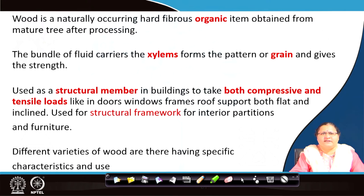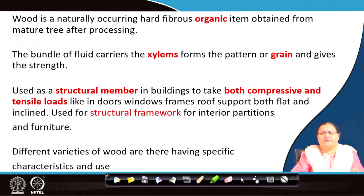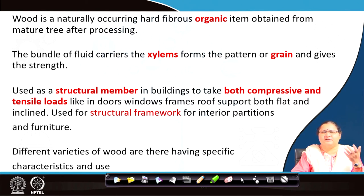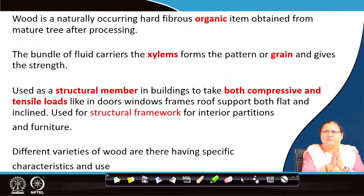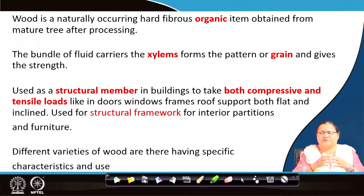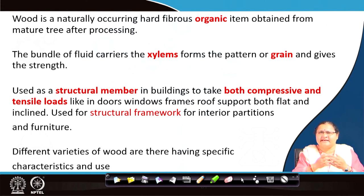If we look into what is wood — it is the hard fibrous organic item formed from the mature tree after being processed. There are lots of carriers of water bundles going from the root, transporting water and minerals to the leaves. These are called xylems. Xylems and phloems actually form the conducting system of a live tree and these are fibrous — fibers moving together forming a bundle which also has strength. It gives strength to the tree, enabling it to sway and face lateral forces.